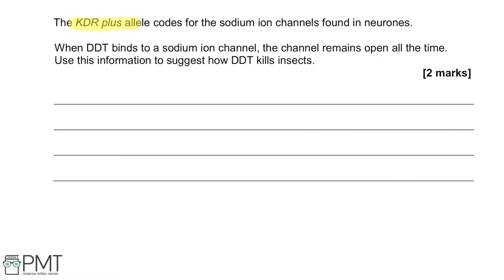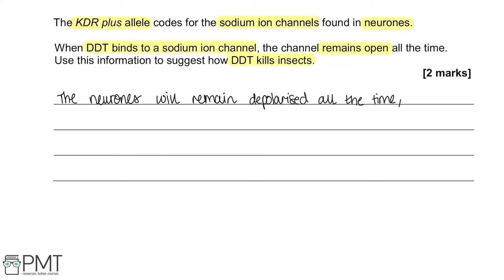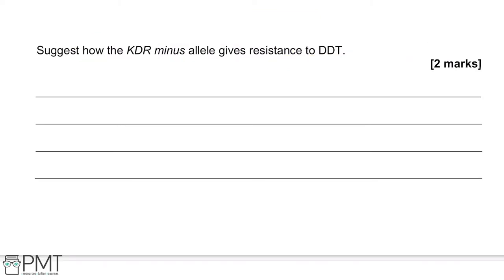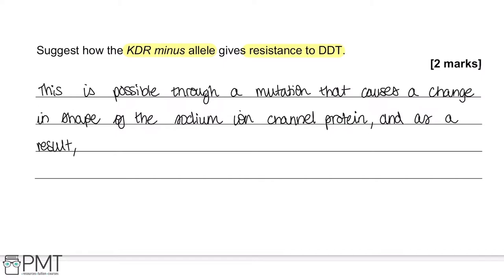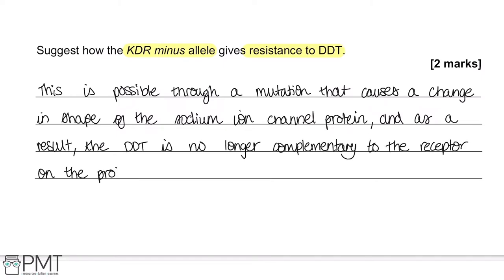The KDR+ allele codes for sodium ion channels in neurons. When DDT binds to the sodium ion channel, the channels remain open all the time, so neurons remain depolarized constantly and there is no impulse transmission — this is how DDT kills insects. The KDR− allele gives resistance to DDT because a mutation changes the shape of the sodium ion channel protein, so DDT is no longer complementary to the receptor on the protein.